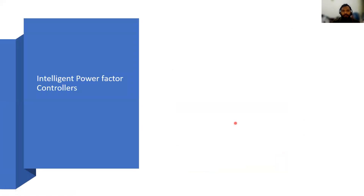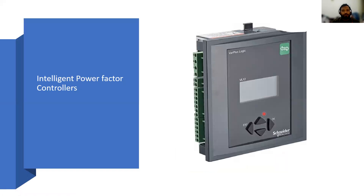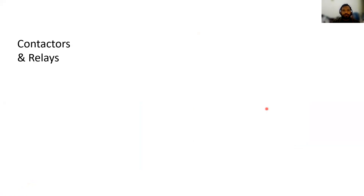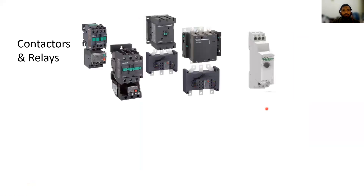Next we have an intelligent power factor controller. The intelligent power factor controller is the brain of the capacitor bank. Commands are given to the capacitors and reactors, including when the fan will be off and on — all those switching commands are given from the controller. Next are the contactors and relays, which act as switching devices. When commands are given from the controller, these contactors and relays will switch on and off accordingly.